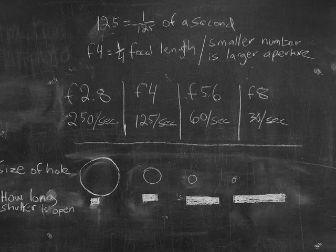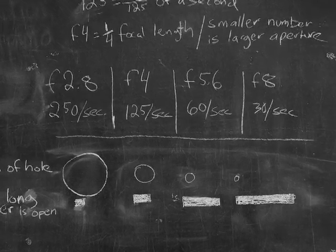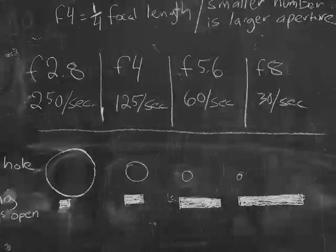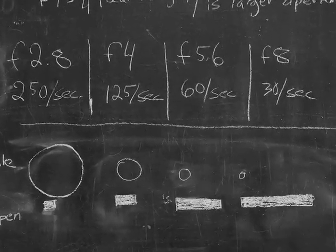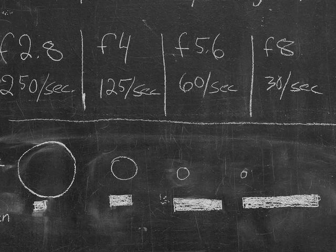So I drew these circles representing aperture sizes and paired them with bars representing shutter speeds, showing that as the lens aperture gets smaller, the shutter has to stay open longer to let in the same amount of light.